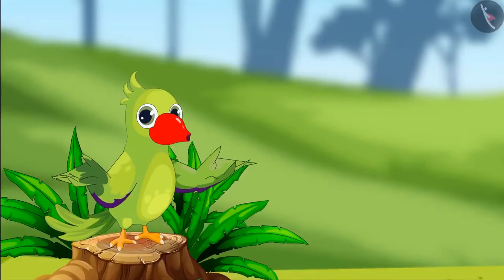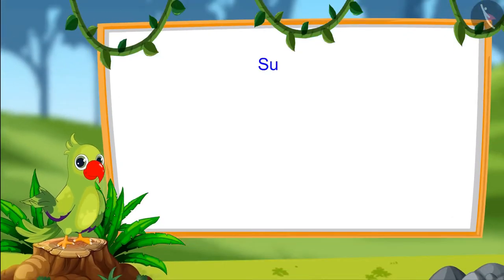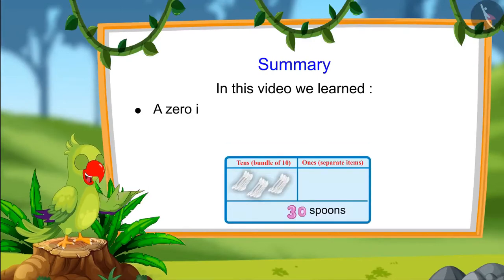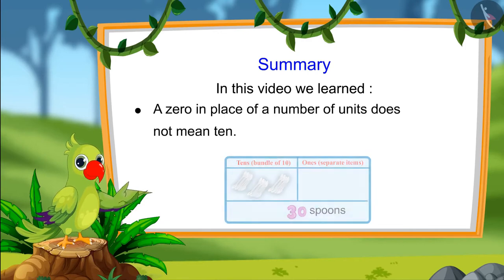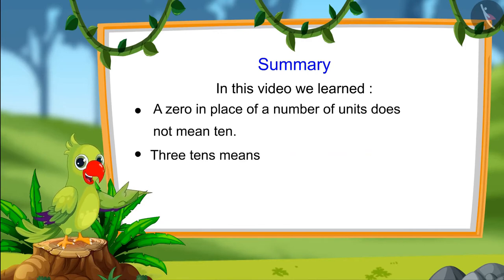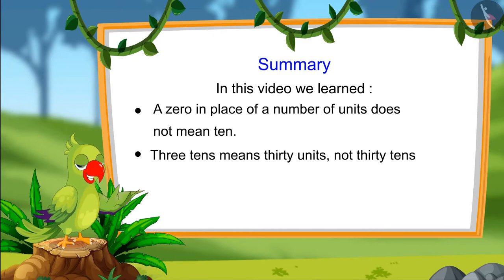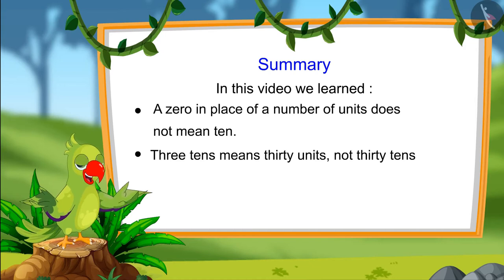So, children, that's all for today. In this video, we learned that 0 does not mean 10 at the end of a number, and 3 tens means 30 units, not 30 tens. I hope you have understood this topic. Bye, friends.